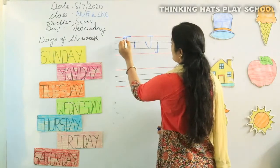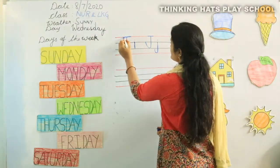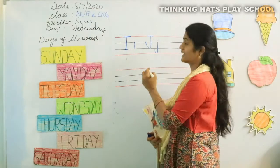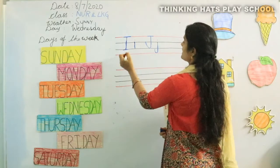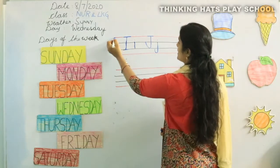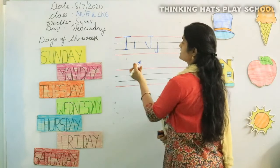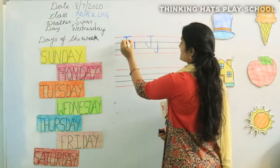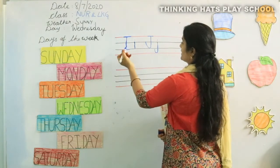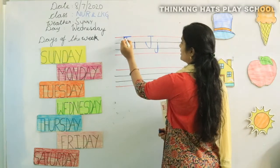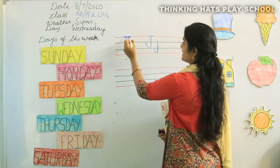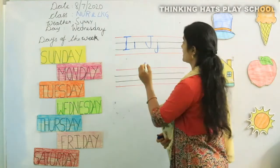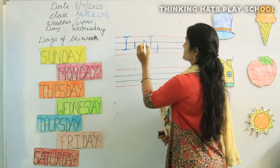How do we write I? Always start from the red line and go to the black line. Only three lines — you have to write only on the three lines. Sleeping line, standing line, sleeping line. One more time — sleeping line, standing line, sleeping line. Capital I, small I.